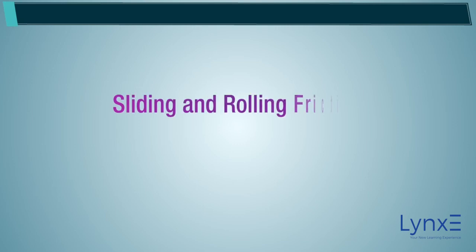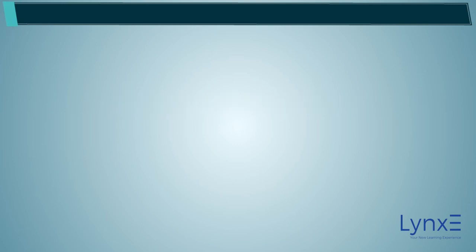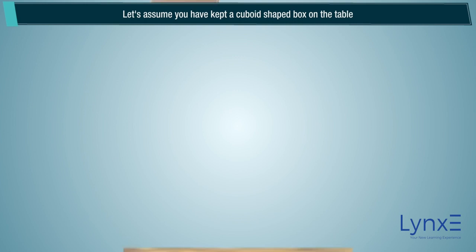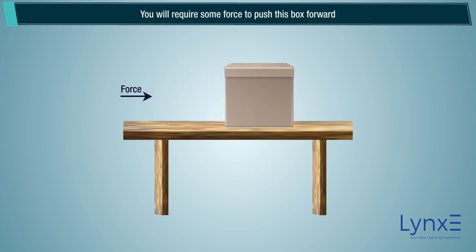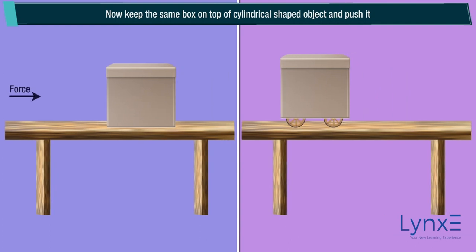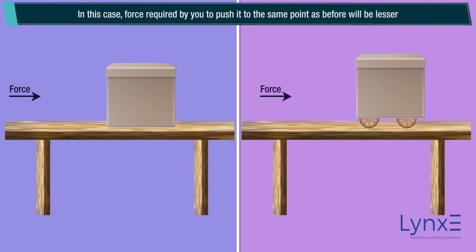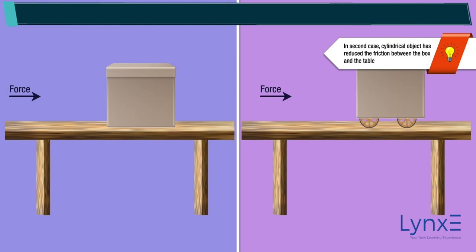Sliding and rolling friction. Let's assume you have kept a cuboid shaped box on the table. You will require some force to push this box forward. Now, keep the same box on top of a cylindrical shaped object and push it. In this case, the force required to push it to the same point will be lesser. In the second case, the cylindrical object has reduced the friction between the box and the table.